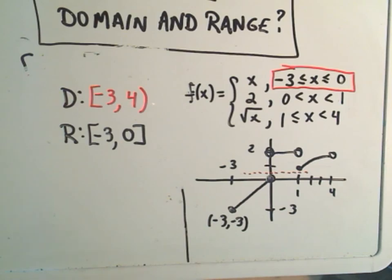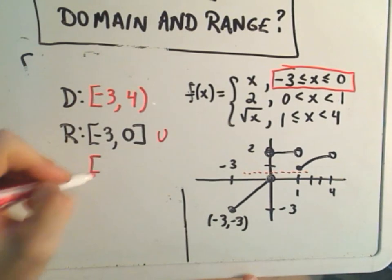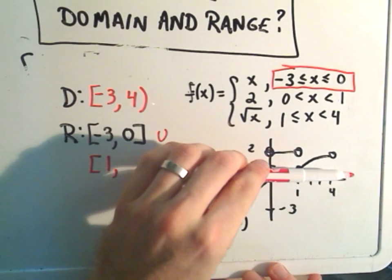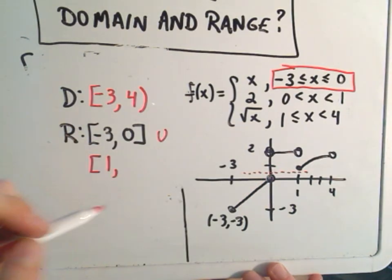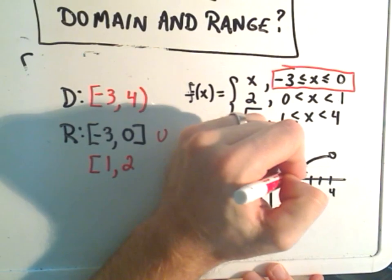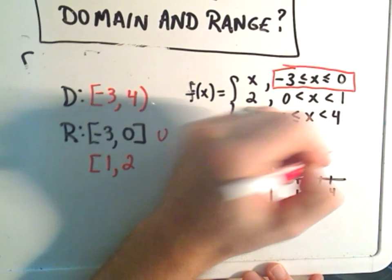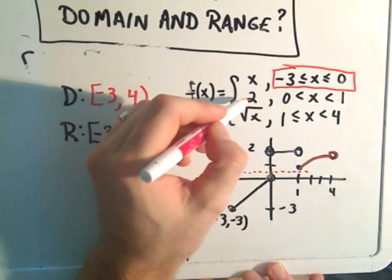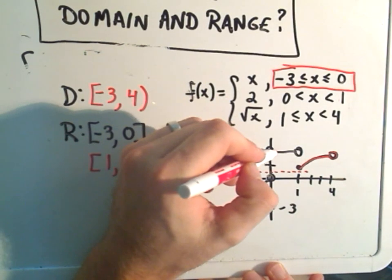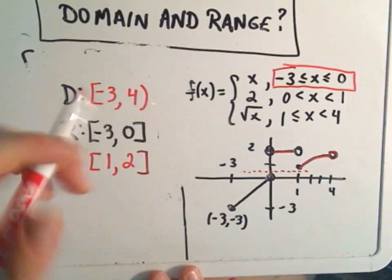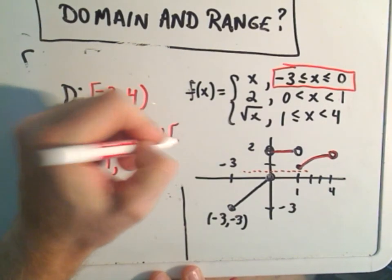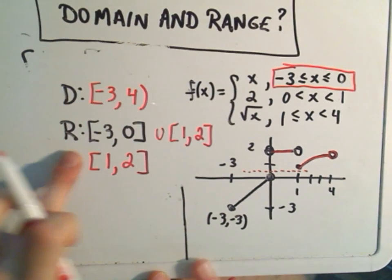Once we get to the y-value of 1, that is included. Then it says we keep going up and getting y-values until we hit the y-value of 2. From the curvy part, the y-value of 2 is not included — we just miss it. But if you look at the middle part, it's actually defined to be equal to 2 over that entire interval, so we'll pick up the value 2 as well. So the range is everything between negative 3 and 0, union the values between 1 and 2, inclusive.